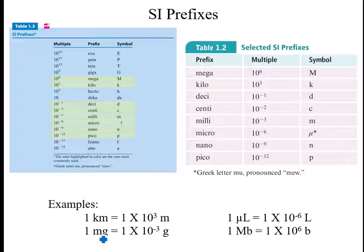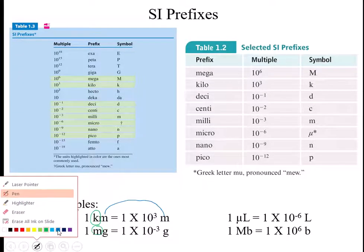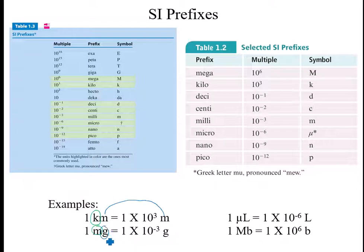One m, little m, is milli. So one milligram equals one times ten to the minus three. This right here is my base unit. This is my prefix, and this is my base unit.